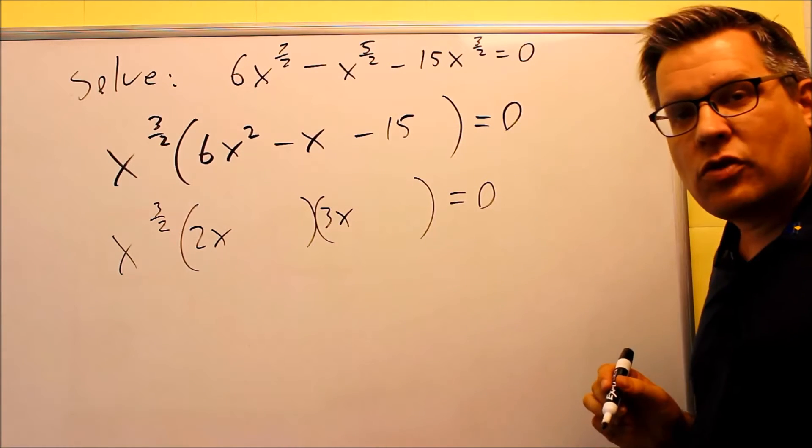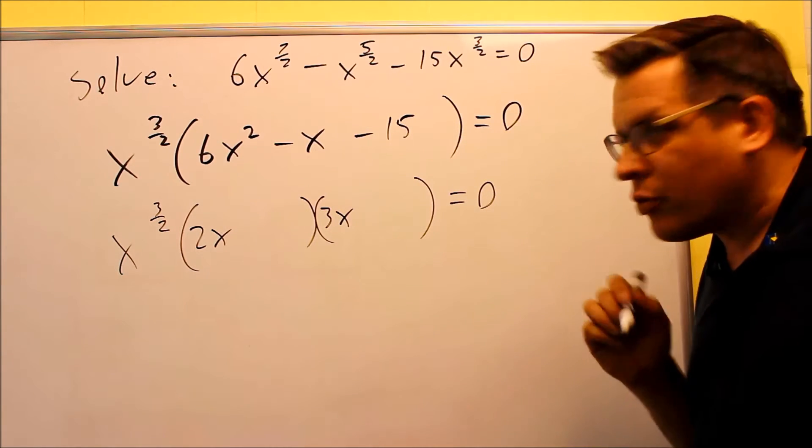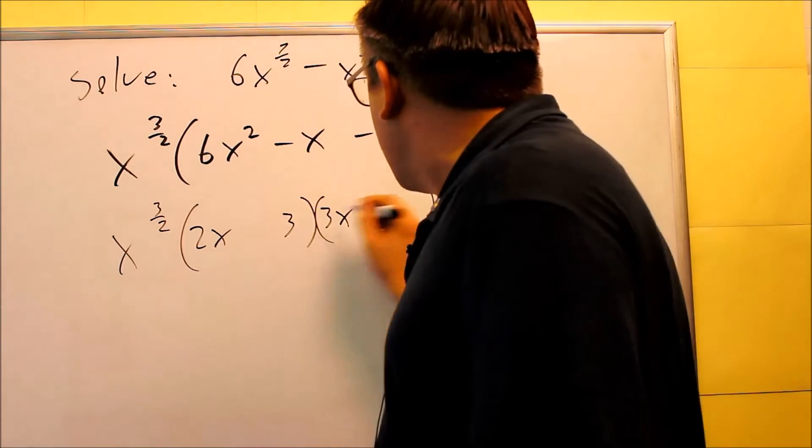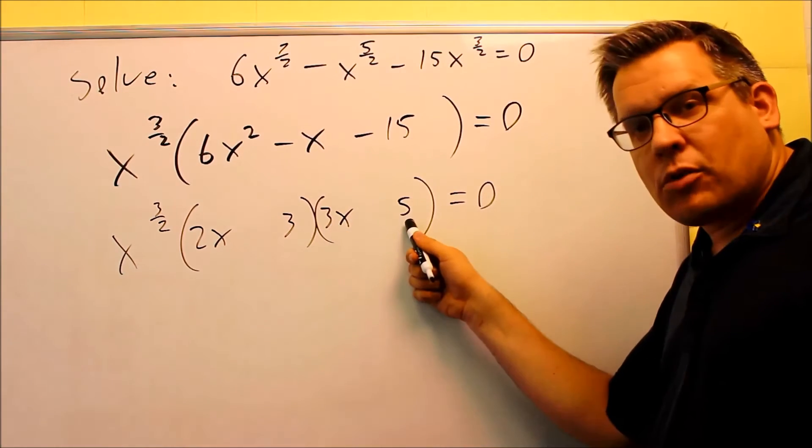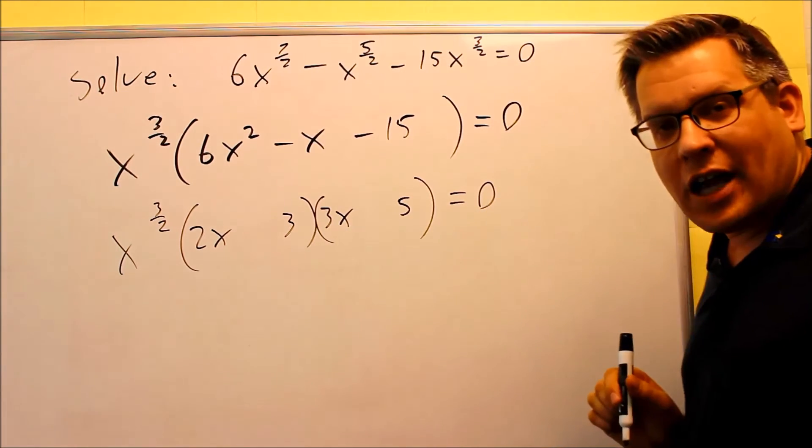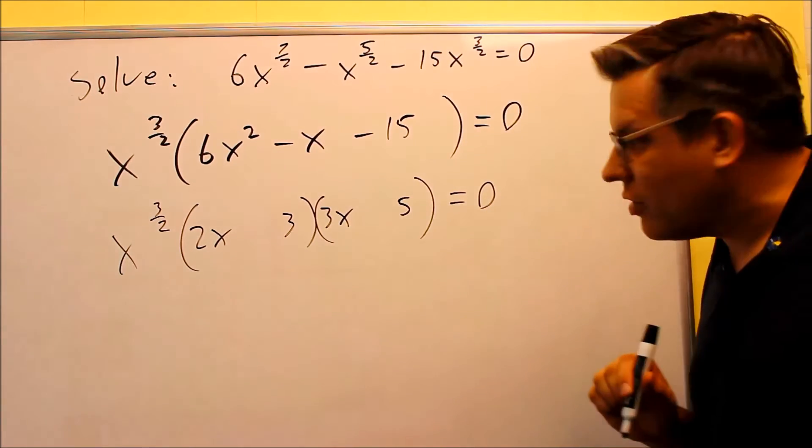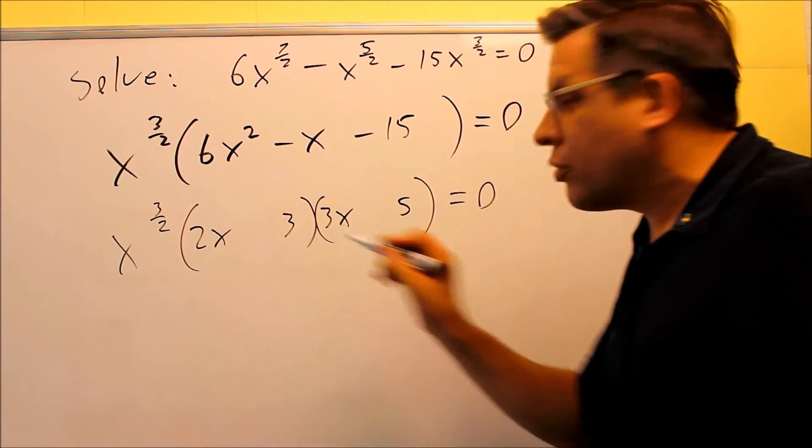For 15, we have a choice of doing either 1 and 15 or 3 and 5. I'll put a 3 here and a 5 there. Very rarely will you have the same number in front of the x and the same number here, like 3 and 3. You're probably not going to have that situation happening very often, so that's why I chose to put the 3 over here instead.